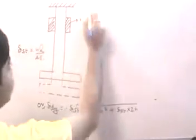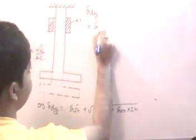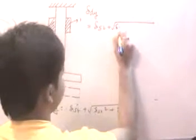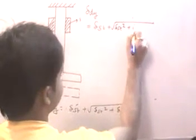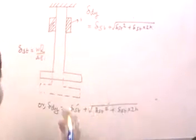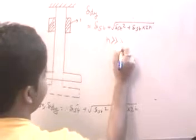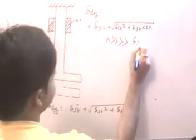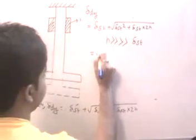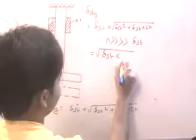So the deflection due to dynamic loading equals delta_st plus the square root of (delta_st squared plus 2H times delta_st). Now, it is pretty clear that H is very much larger than delta_st — the deflection due to static loading — and therefore delta_dy will be approximately equal to the square root of (delta_st times 2H).